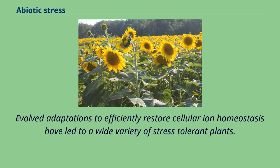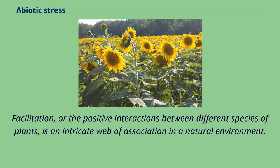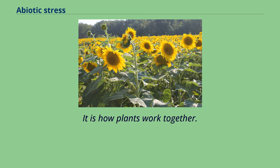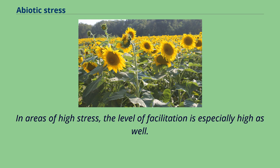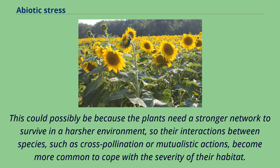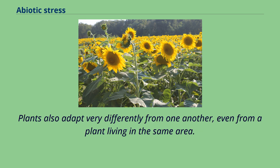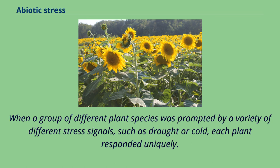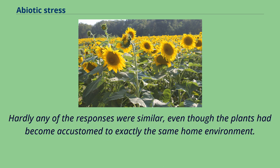Facilitation, or the positive interactions between different species of plants, is an intricate web of association in a natural environment — it is how plants work together. In areas of high stress, the level of facilitation is especially high as well, possibly because plants need a stronger network to survive in a harsher environment, so interactions such as cross-pollination or mutualistic actions become more common. Plants also adapt very differently from one another — when a group of different plant species was prompted by a variety of stress signals such as drought or cold, each plant responded uniquely, even though they had become accustomed to exactly the same home environment.